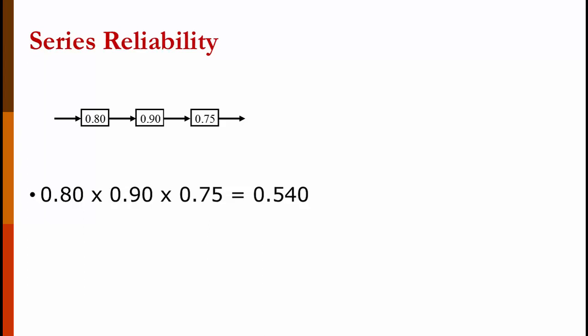Series reliability is when you have multiple components that are independent of each other and a failure of any of these components causes the system to fail. To get the overall reliability, you just multiply the independent reliabilities. So here I have three components with an 80%, 90%, and 75% reliability. Multiplying those numbers together gives me a 54% reliability. In this case, your overall reliability is always going to be less than your smallest reliability. So my smallest reliability here is 75%, so I know before I start that my overall reliability is going to be lower than 75%.